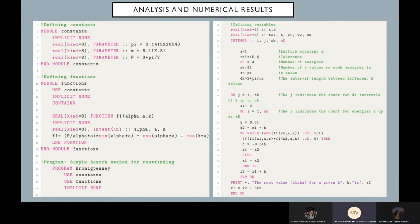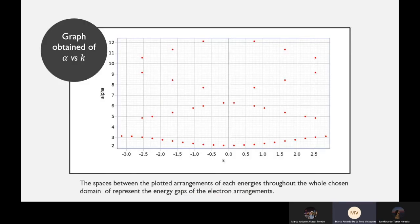For the code, we first defined our constants, which were pi and p, which as said before, was 3 times pi over 2. Then we defined our functions, which we only defined our main function. We then defined the program to ask it to use the constant and the functions. Then defined our variables, which the important were the lattice constant a, the value of ne and nk, which are the values that we are going to use for energies and for k's in this program. Then we defined our j and our i, which are the parts of the program that are going to be changing our values of k and e. We then asked the program to do the search method, and at the end we asked it to print the root values for alpha and k.